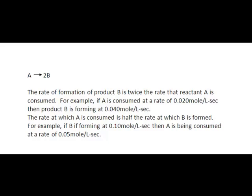In this video, I'd like to relate stoichiometry to rate of reactions. Here's a general reaction: A breaks down into 2B. So the stoichiometry is 1 to 2, or we could say 2 to 1. That means the rate of formation of the product B is twice the rate at which reactant A is consumed.